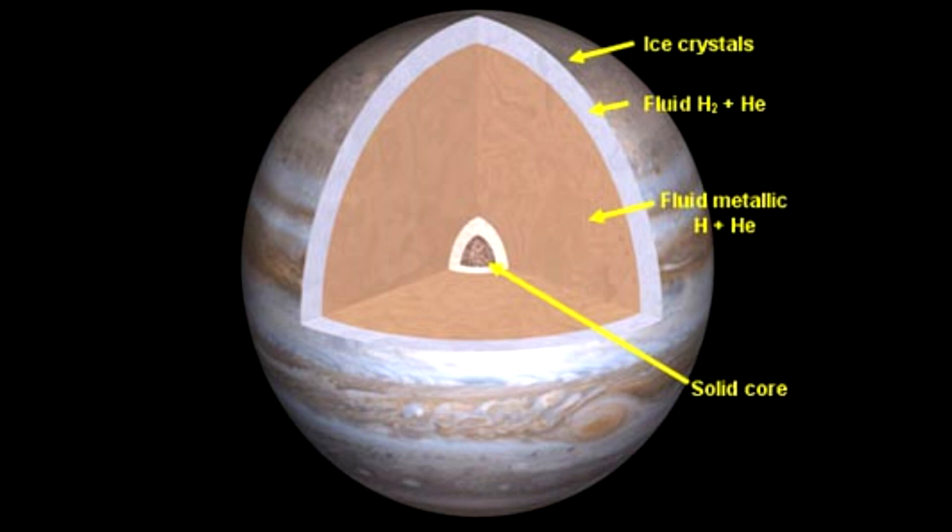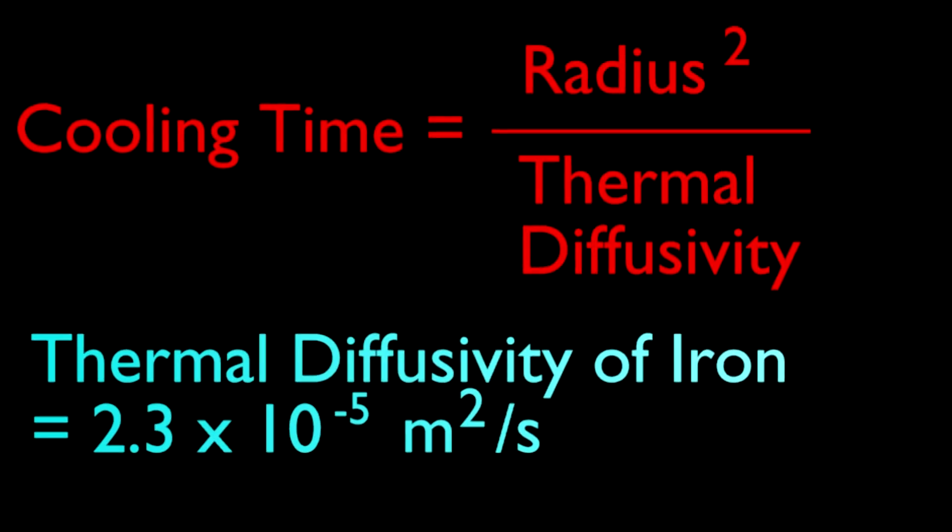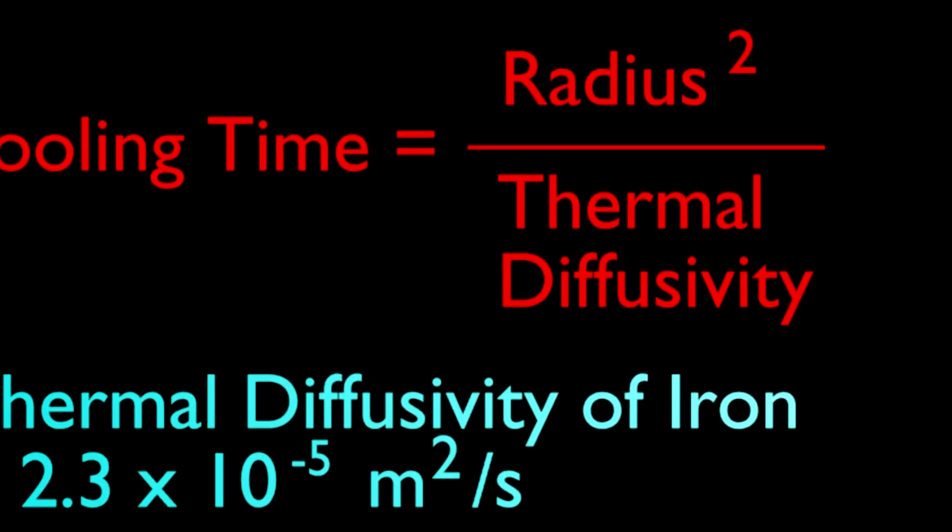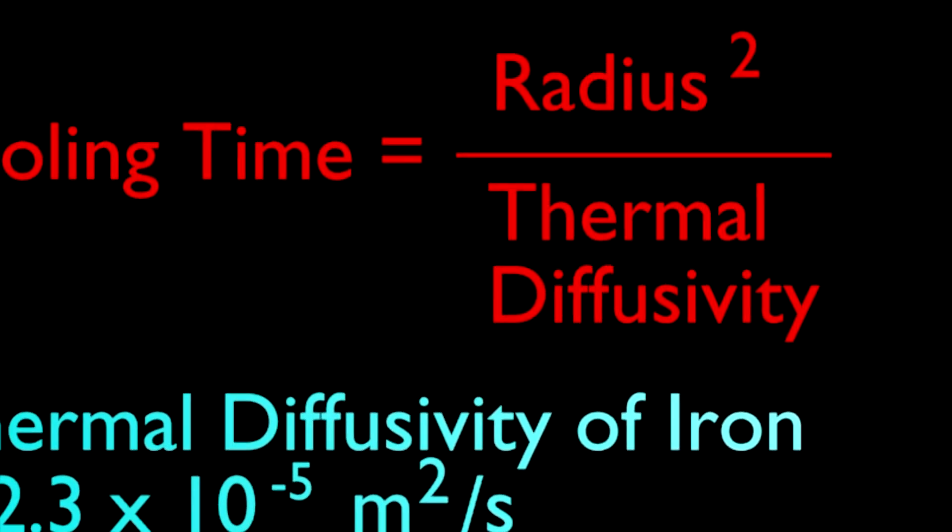The point is that you cannot extrapolate your intuition about the cooling rates of macaroni and cheese to the cooling rates of an object the size of Jupiter. The cooling time of an object goes as the square of the radius of the object, so doubling the radius of an object increases its cooling time by a factor of 4.